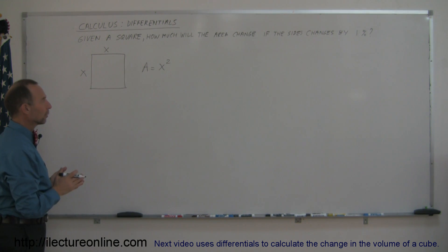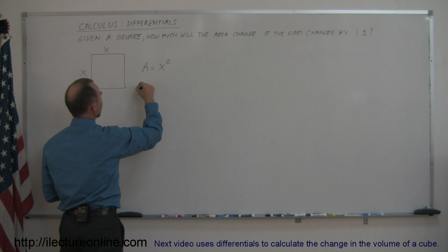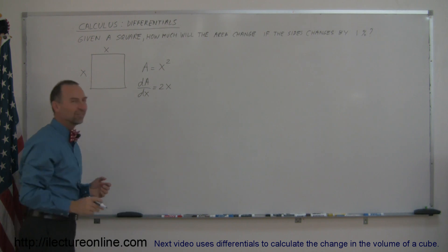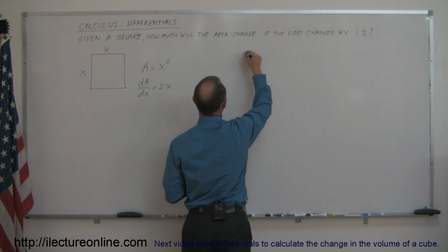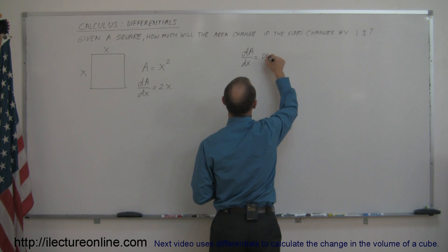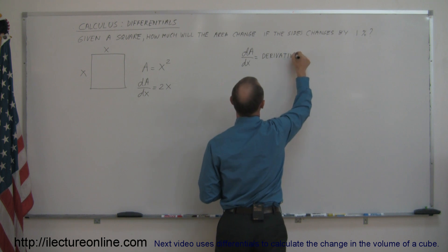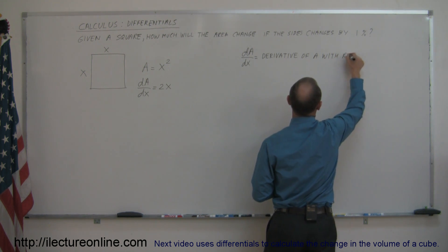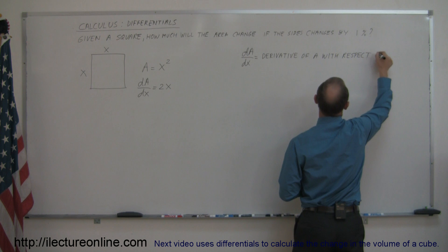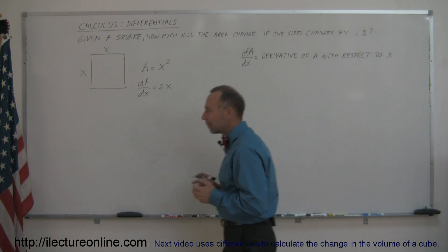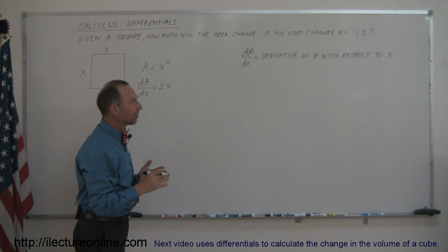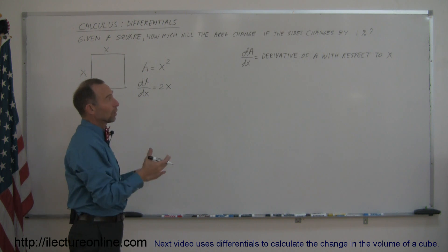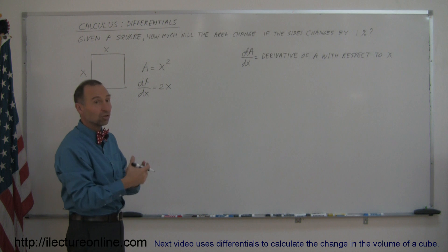If we now take the derivative of that area with respect to x, we get dA dx is equal to 2x. Now, what does dA dx mean? Well, dA dx is equal to the derivative of A with respect to x. That means how fast is A changing as x changes. That's really what it means. So make a change in x and you have a corresponding change in A.